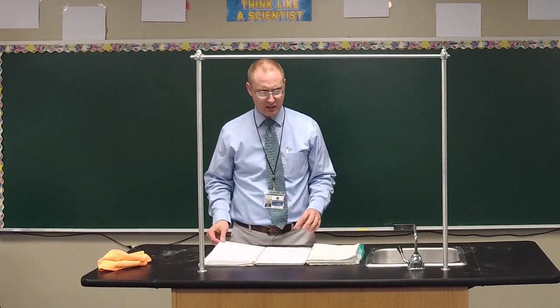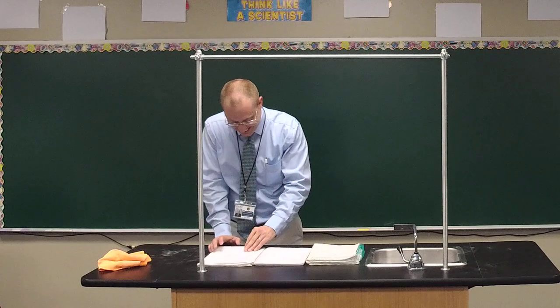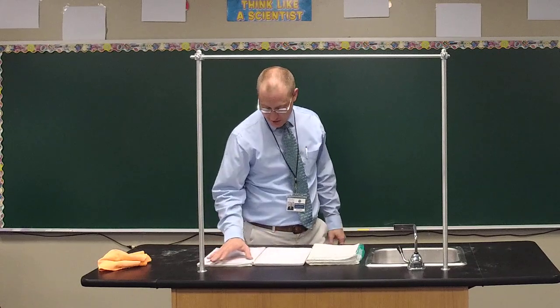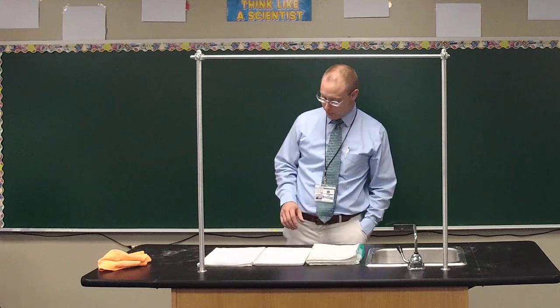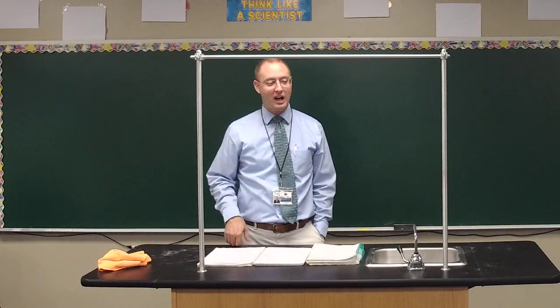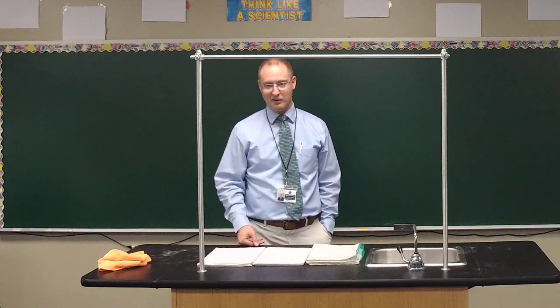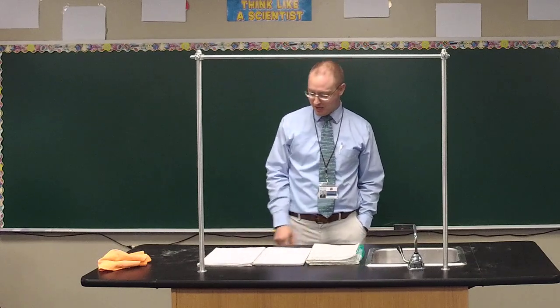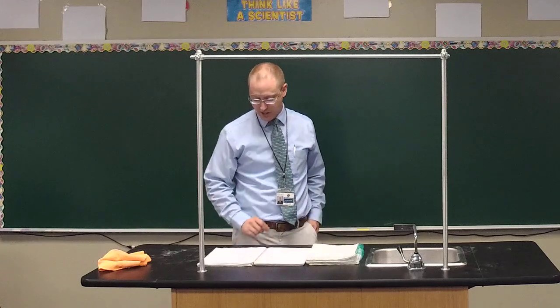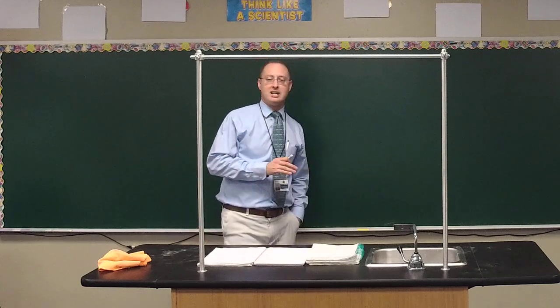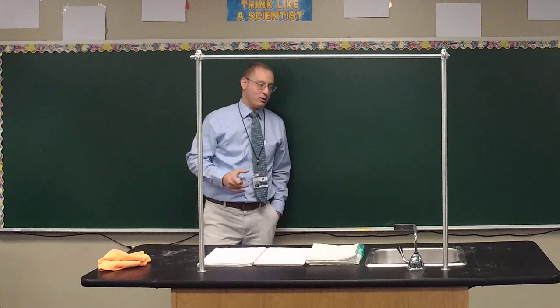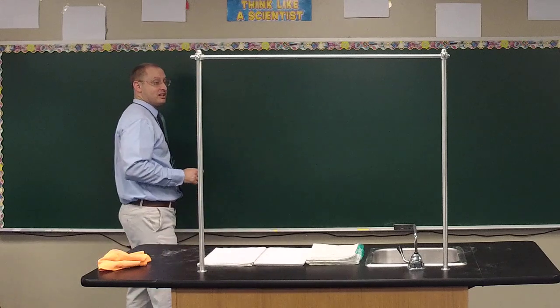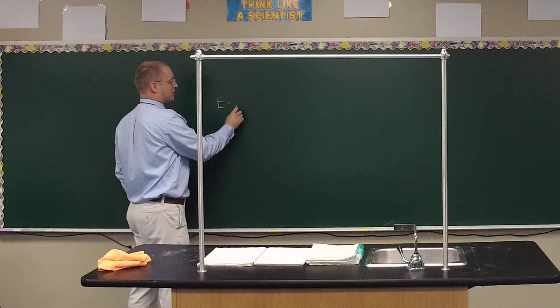We talked about a really smart guy yesterday who gets his name taken in vain every time someone does something stupid — who was the smart guy we talked about? He came up with the theory of relativity. Einstein, right. So Einstein, back in the early 1900s, came up with his theory of relativity as specified by one well-known equation. Michael, do you know it? E equals MC squared. Excellent. And what is the letter C? Speed of light. Do you remember the value? Three times ten to the eighth meters per second. And what are M and E? Mass and energy.